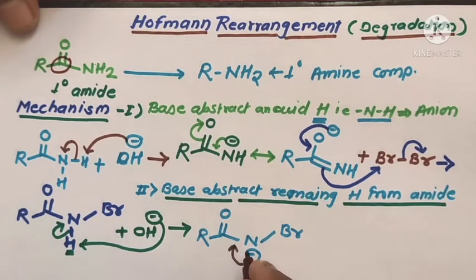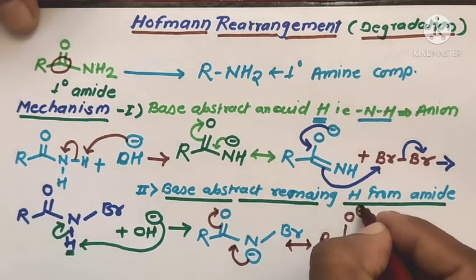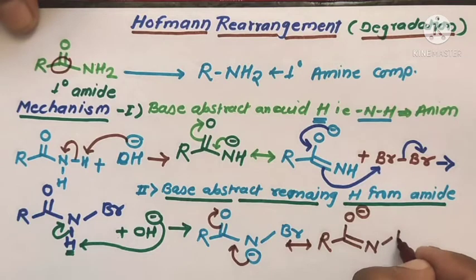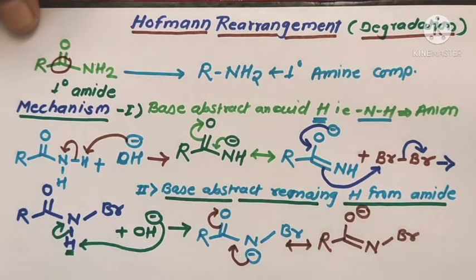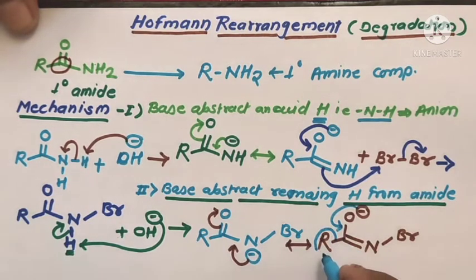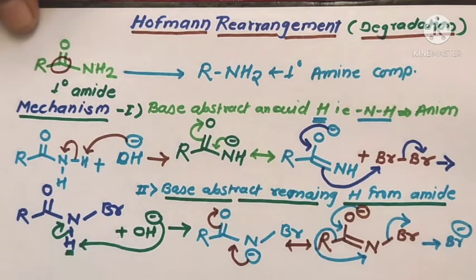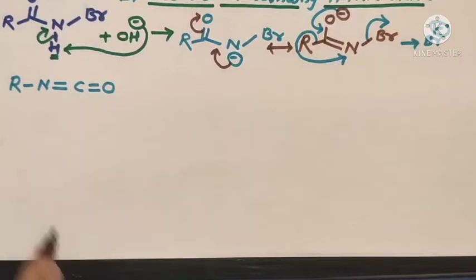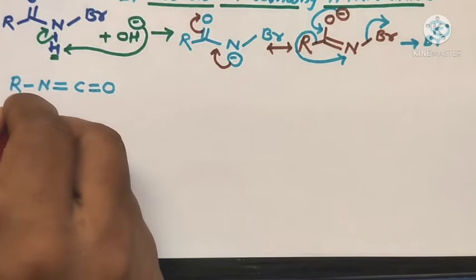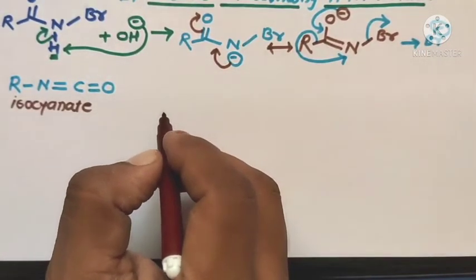Now a rearrangement takes place. The bonding electrons shift to form a single to double bond, and electrons shift toward the oxygen atom to form O⁻ ions, giving the resonating structure RC(O⁻)=NBr. The R group then migrates from the carbonyl carbon atom toward the nitrogen atom. Simultaneously, the bromide ion (Br⁻) is eliminated, forming the isocyanate intermediate R-N=C=O.